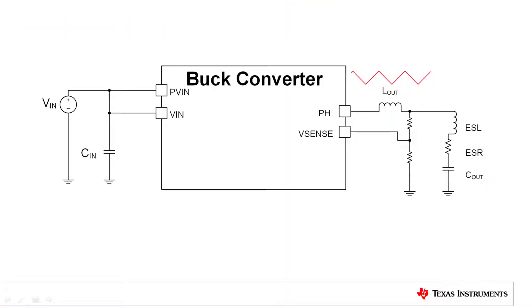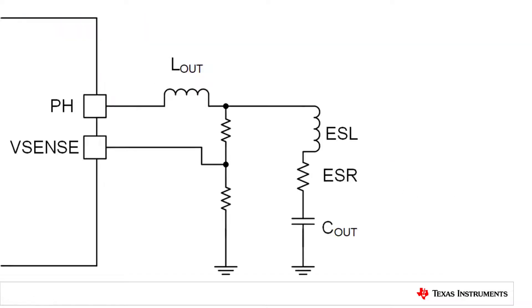In a typical buck converter, an output ripple current is generated with the interaction of the output switching node and the output inductor. This current interacts with the output ESL, parasitic inductance, ESR, parasitic resistance, and output capacitance to generate the voltage ripple.